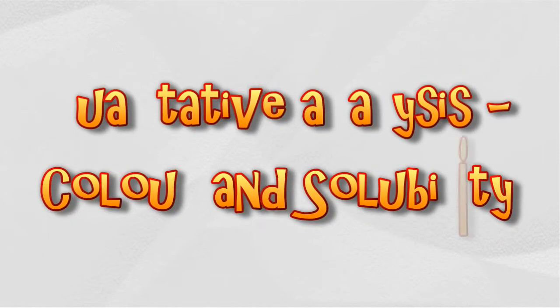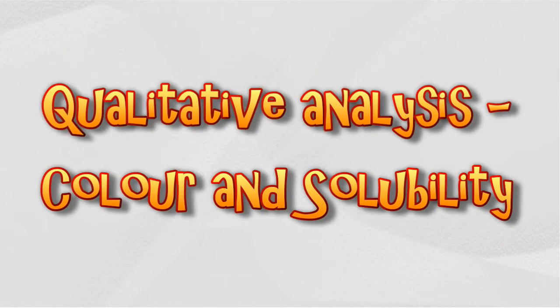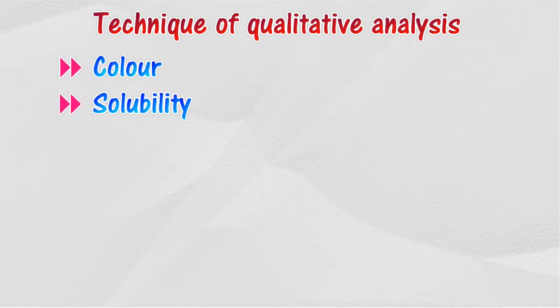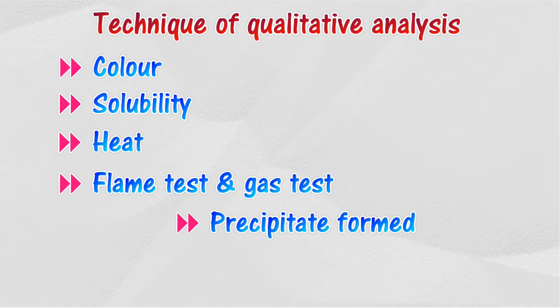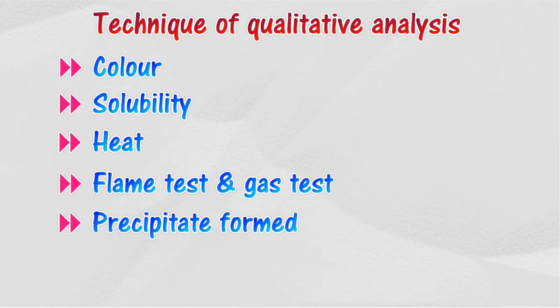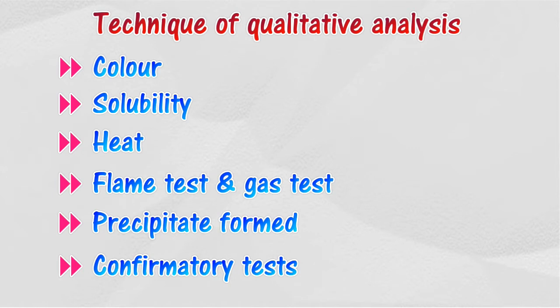Qualitative analysis is a chemical method to determine the substances present in a compound through certain chemical tests. Cations and anions in salts can be identified through the color of the salt, solubility of the salt in water, the effect of heat on the salt, flame test, gas test, identifying the precipitate formed with a specific chemical reagent, and confirmatory tests for ions.